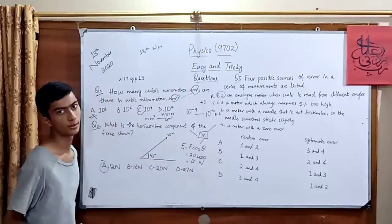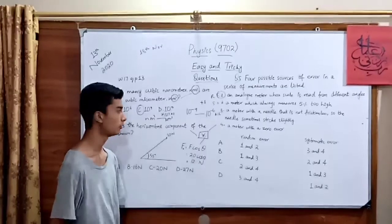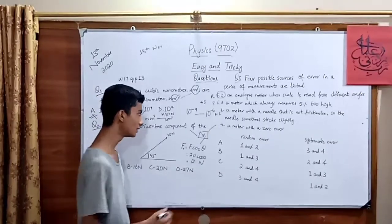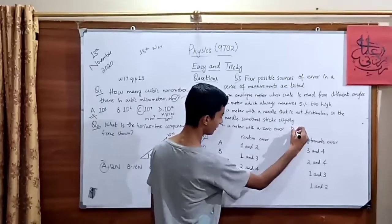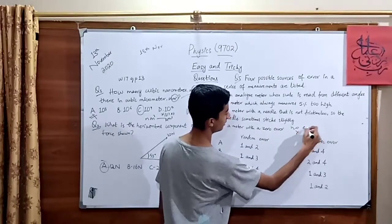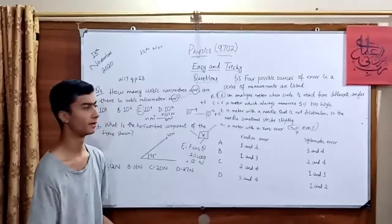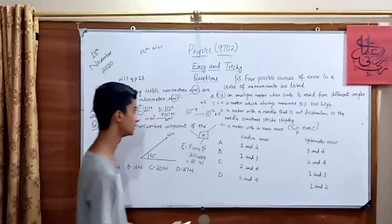Now fourth one is quite a confusing option. The option states that a meter with a zero error. A meter with a zero error means - it does not mean that there is no error. Many could say that zero error means that there is no error in this meter, but it is not like that. It is a zero error.